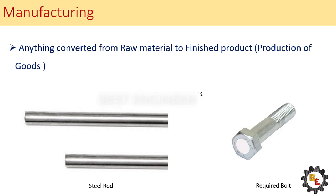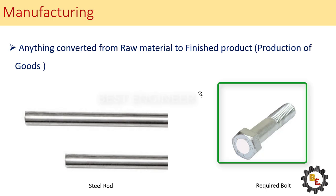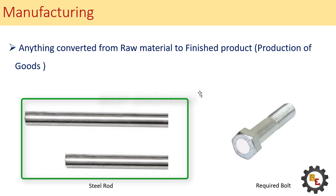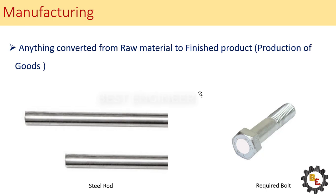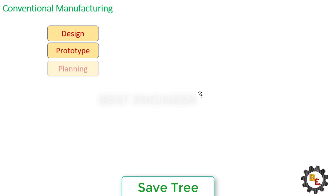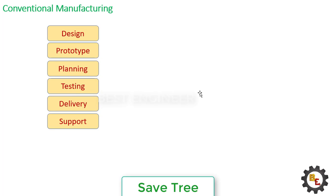Anything that is converted from raw material to a finished product is called manufacturing. For example, just look at these two pictures — we need a bolt, and that bolt is manufactured from this steel rod. In between, a number of processes are involved in commercial manufacturing, for example: design, prototype, planning, testing, delivery, support, research, and finally analysis.